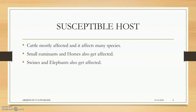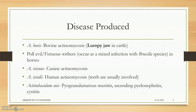Susceptible hosts include small ruminants, horses, swine, and elephants. Cattle is the most affectable animal. The disease produced is bovine actinomycosis, that is lumpy jaw in cattle. Sometimes it may cause a mixed infection with Brucella in cases of poll evil and fistula species — that is Brucella abortus in the case of horses.